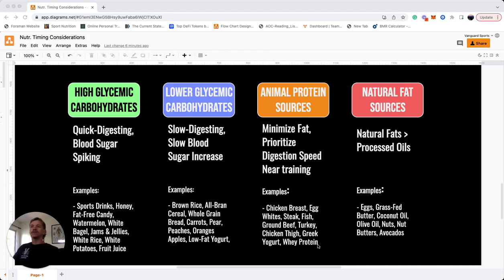Next are natural fat sources. If you remember from our food composition video, we want to opt for natural fat sources as opposed to processed oils and fats. Some examples would be eggs, grass-fed butter, coconut oil, olive oil, nuts, nut butters, and avocados.